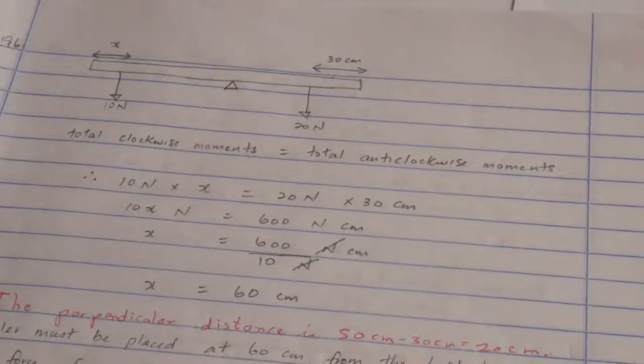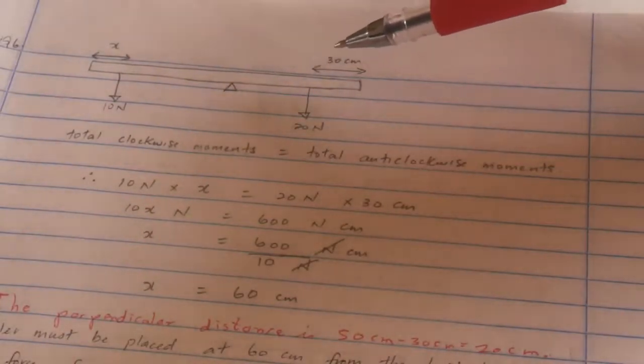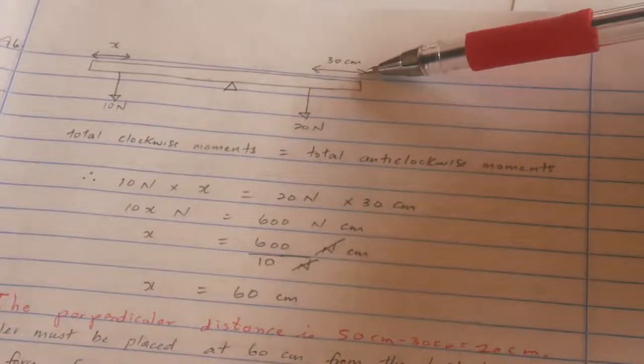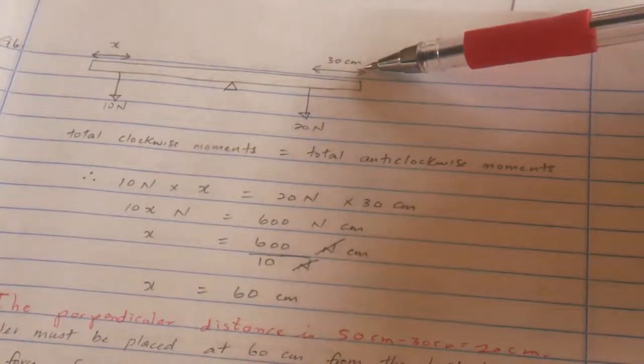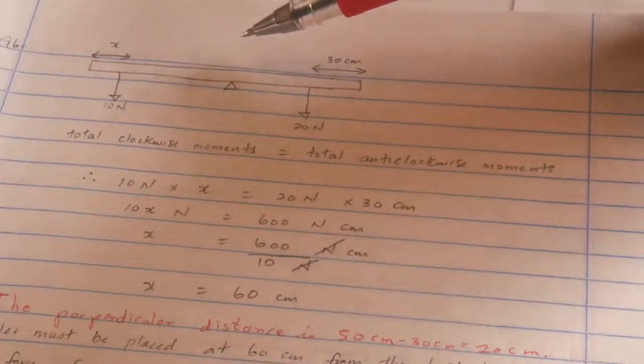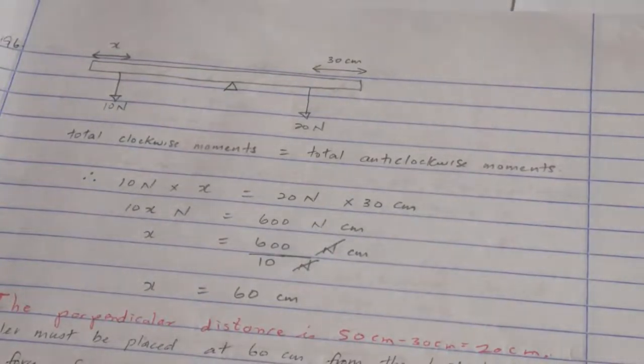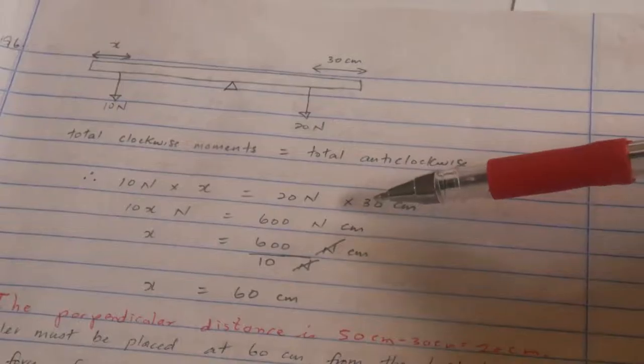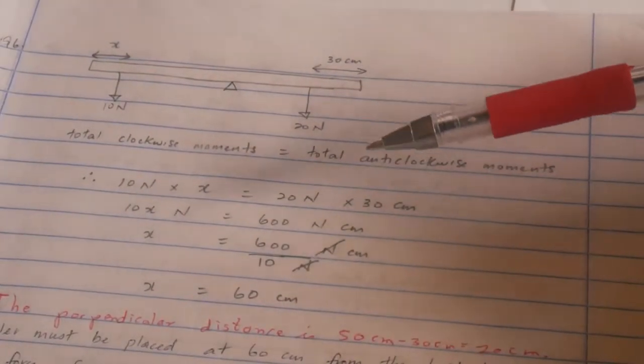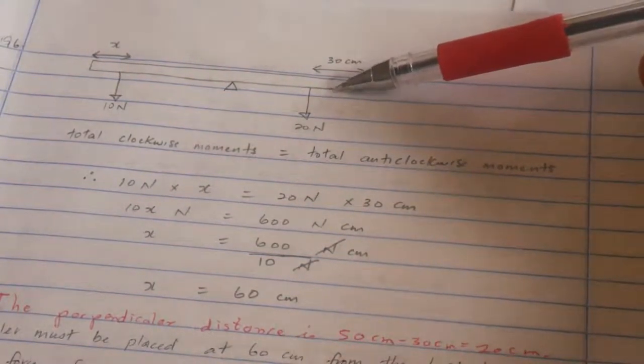The problem with this question, however, is that it says the ruler is one meter. Sorry, the ruler is one meter. From here to here is 50 centimeters, so from here to here is 30 centimeters. It means the moment is acting at 50 minus 30, which is 20 cm away from the fulcrum. Remember, you always want the force times the perpendicular distance from the fulcrum. So this clockwise moment, but first of all, this is incorrect.